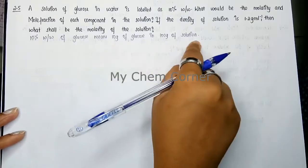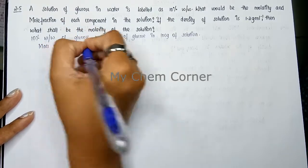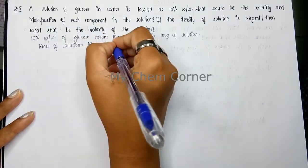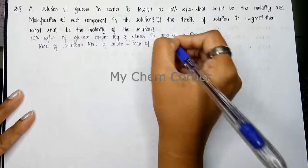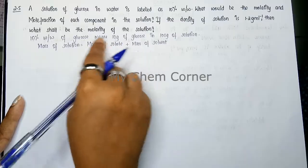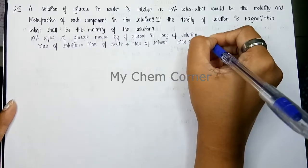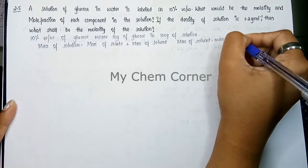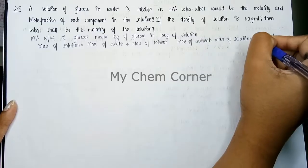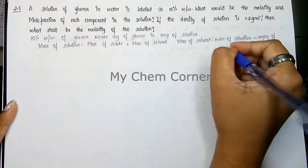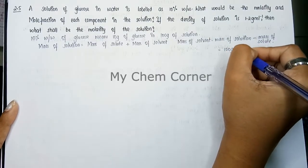We know that mass of solution equals mass of solute plus mass of solvent. So mass of solvent equals mass of solution minus mass of solute. Mass of solution is 100 grams minus mass of solute which is 10 grams, giving us 90 grams as the mass of solvent.